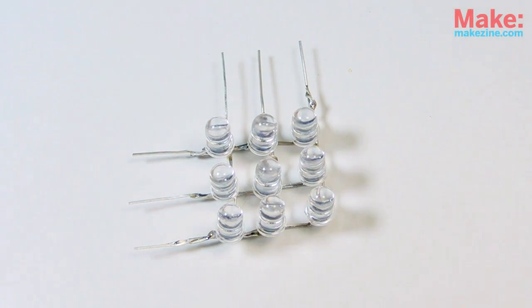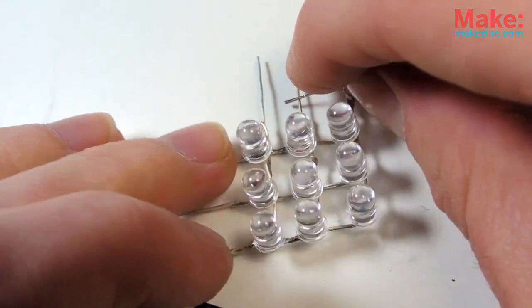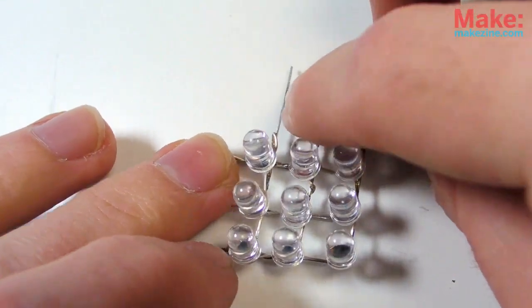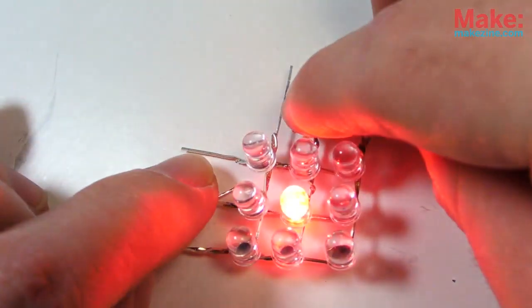So now, just like in the schematic, we have three positive lead, or anode, columns, and three negative cathode rows. If I want to light a particular LED, I just apply positive voltage to its column and ground to its row.